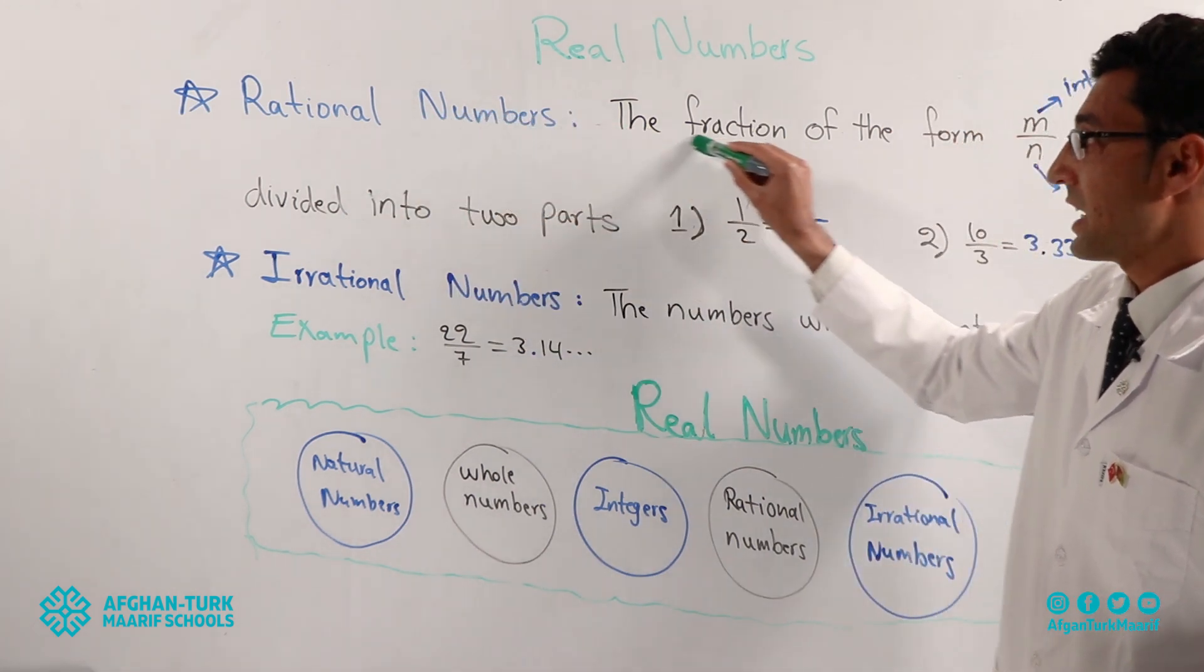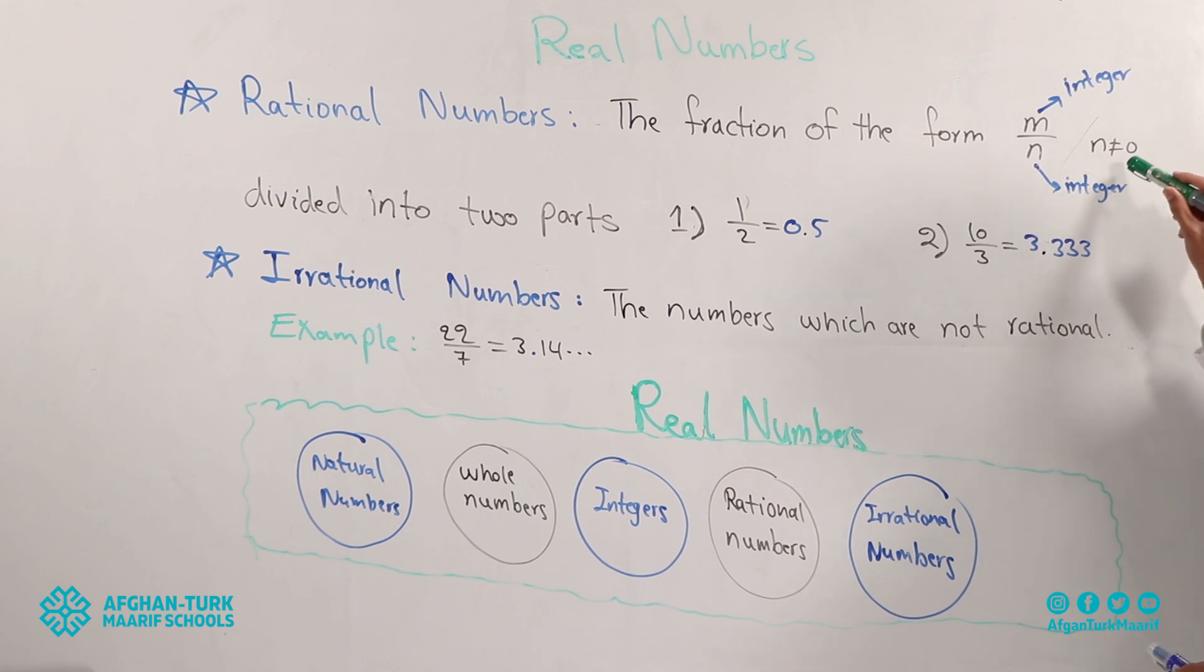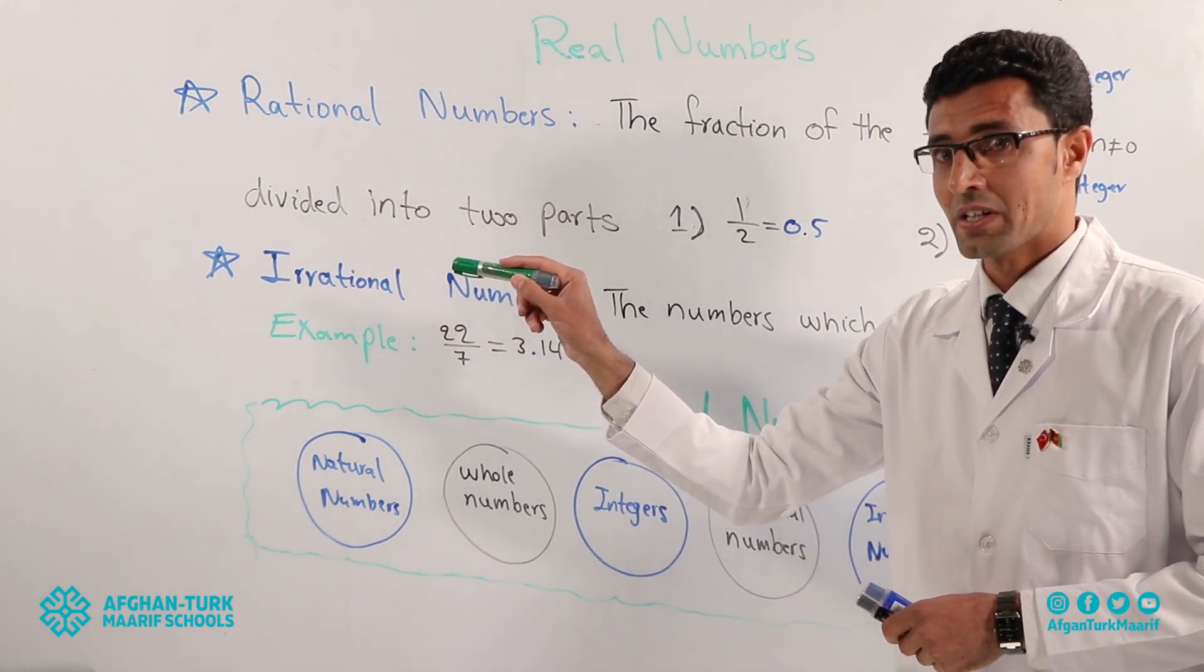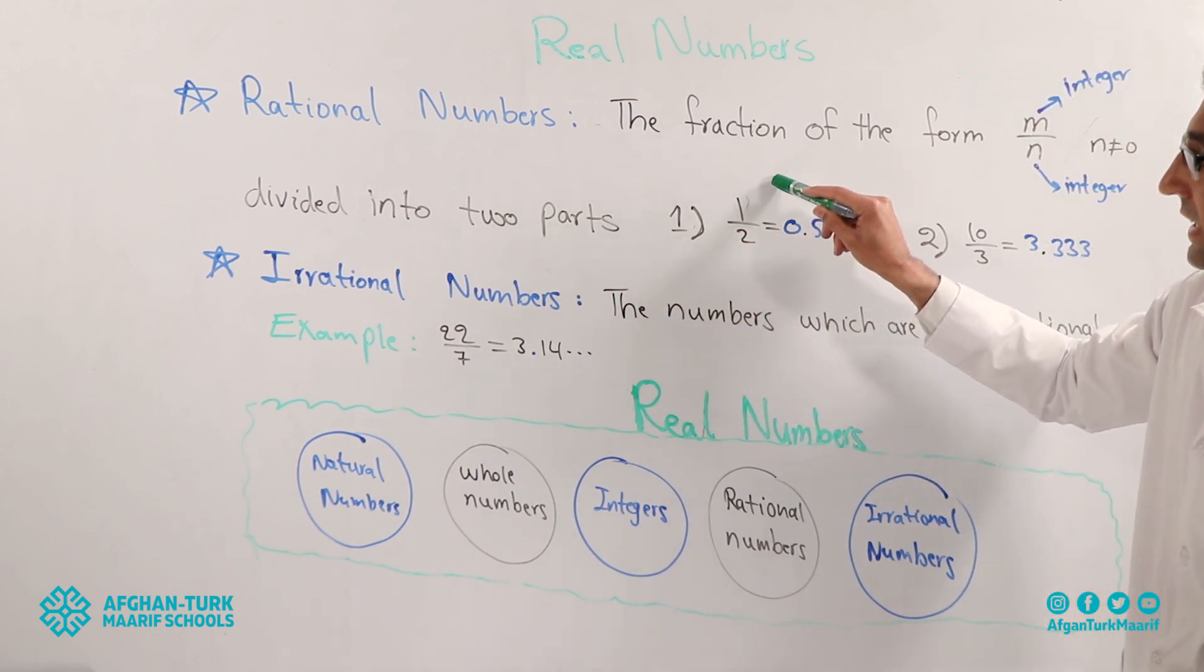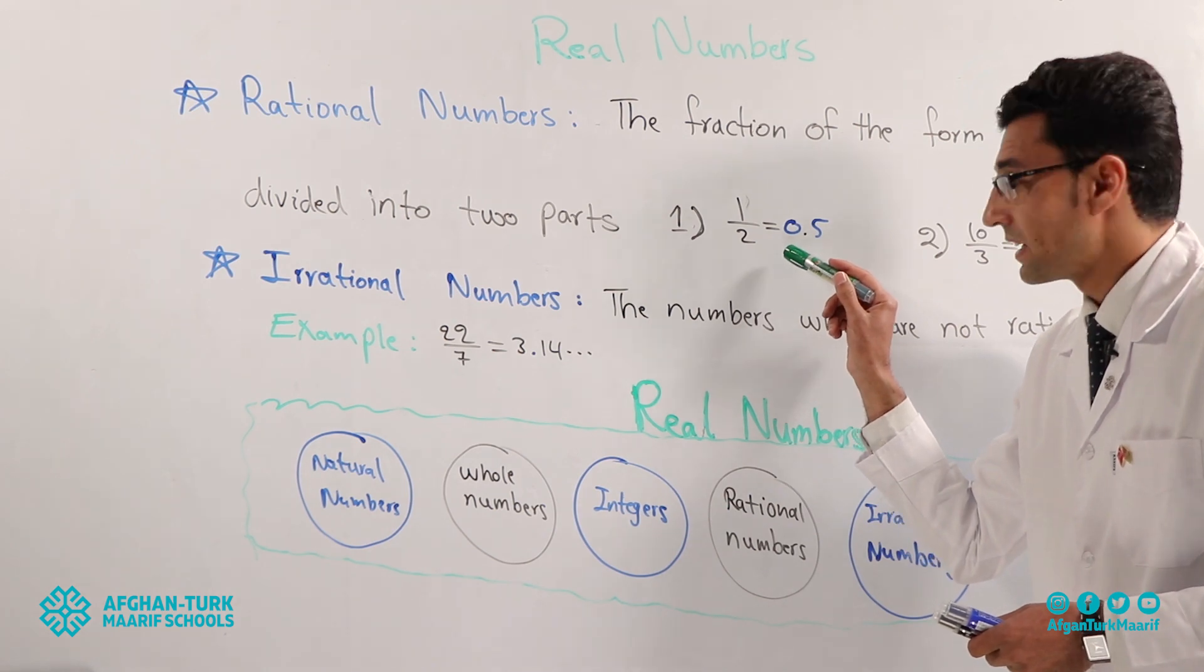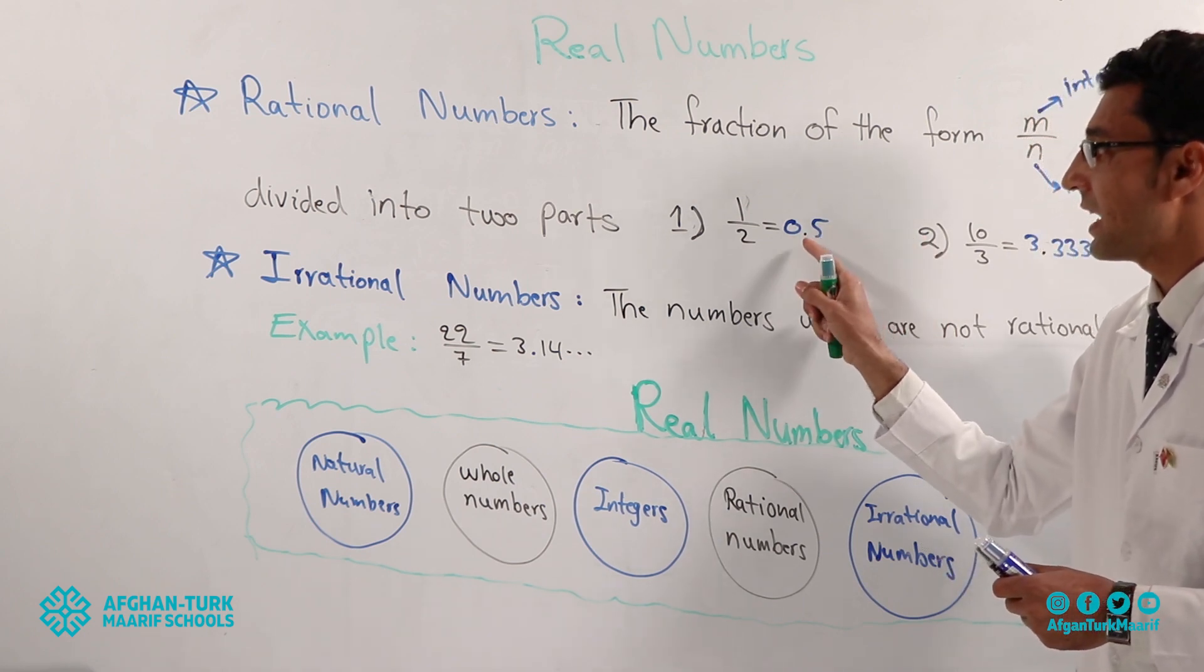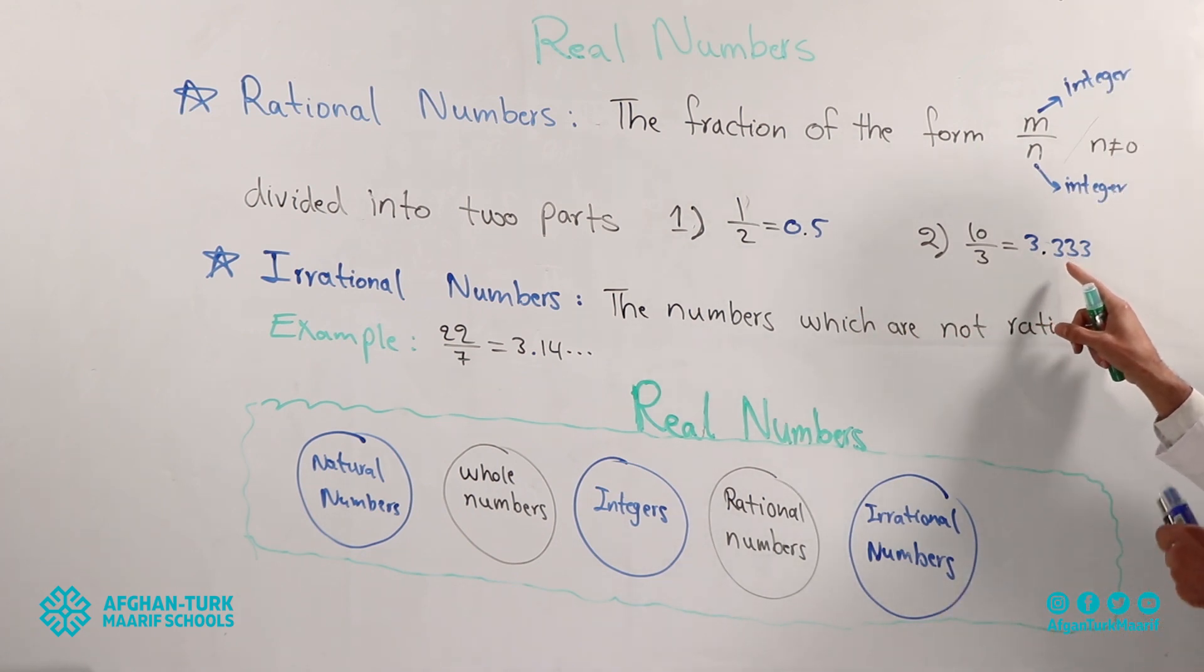Okay. It must not be zero. And we can have rational numbers by this definition. The fraction of the form M divided by N. N is not equal to zero. It has two types of rational numbers. What are them? Divided into two parts. The numbers that after the point, it means the number of decimals are defined. It means how many numbers after decimal we have. After the point only one.